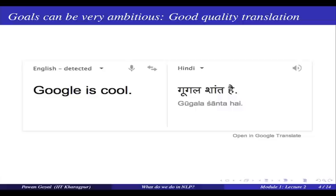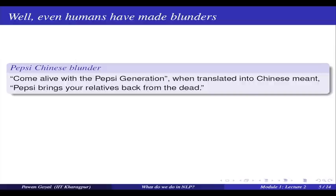This is an actual engineering problem that has to be solved by designing efficient algorithms. And while I was talking about some translations that do not go very well in Google, I want to show you examples that not only machines — even humans have made blunders when it comes to translation.